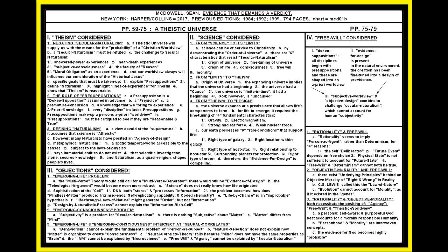Now let's take a look at these specific notes on free will. Look at rationality and free will. Rationality seems to imply person as agent rather than determinism for four reasons. The self deliberates, future event depends on free choice, physical state is not sufficient to account for future state, and free will and determinism cannot both be true. Two, objective morality and free will. There exists underlying principles behind the objective morality of right and wrong and reality. C.S. Lewis called this the law of nature. Evolution cannot account for morality as if it existed in the physical genes. So again, subjectivity and morality and human consciousness challenge secular naturalism. Note three, rationality and objective morality both necessitate the positing of agency, the positing of free will, and the positing of theistic worldview. A personal, self-aware, and purposeful God best accounts for a morally responsible humanity. Personhood and morality are interwoven concepts, says McDowell. The evidence for God becomes highly, highly probable.